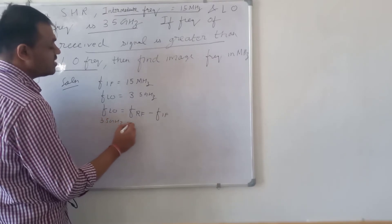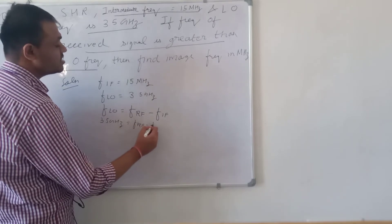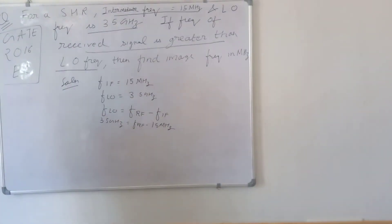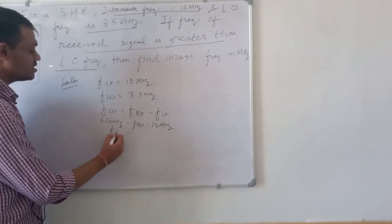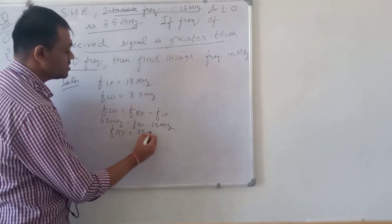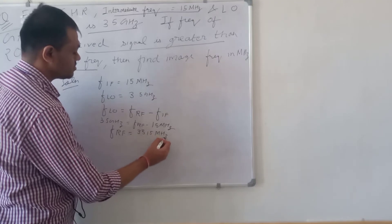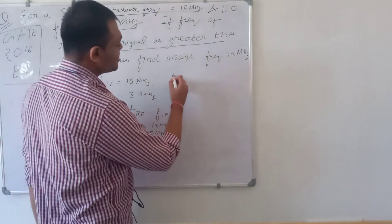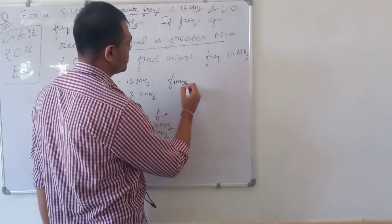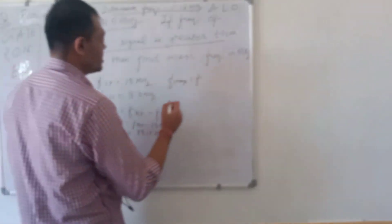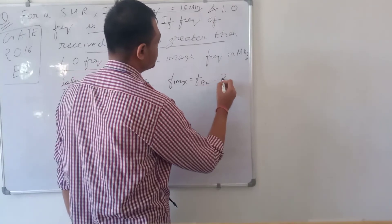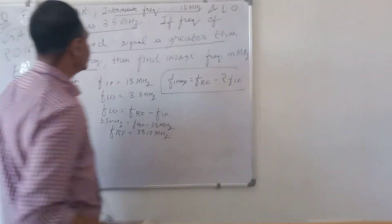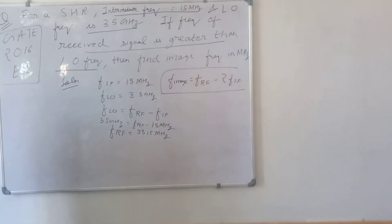So FLO is 3.5 gigahertz equals FRF minus 15 megahertz, which gives FRF equal to 3.515 gigahertz. Now the image frequency formula, when the received signal frequency is greater than the local oscillator frequency, is: image frequency equals FRF minus 2 times FIF.